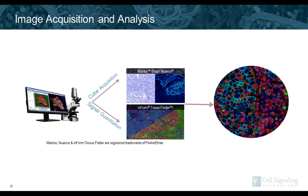Once the panel is optimized, the acquisition of images and image analysis is the next step. Here at CST, we use the Mantra system from Perkin Elmer and the InForm Tissue Finder for image analysis. A link will be provided at the end of the webinar to posters and image analysis data that has been generated.